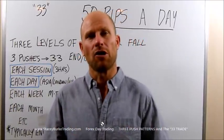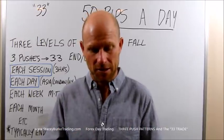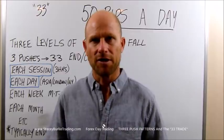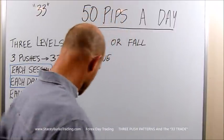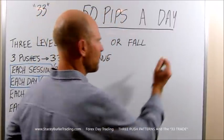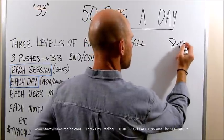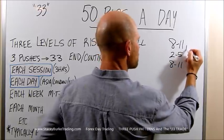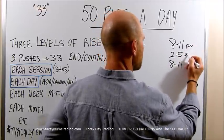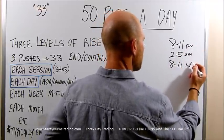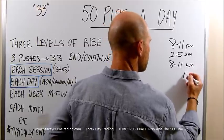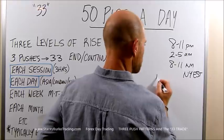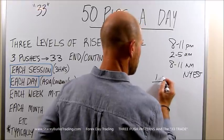Today we'll revisit our very basic system. We work from the high and the low of the day, very specific to the market timings. We've talked about this — 8 to 11, 2 till 5, and 8 to 11: PM for Asia, AM for London, and AM for New York Eastern Standard Time. We talked about that first hour typically being a trap.